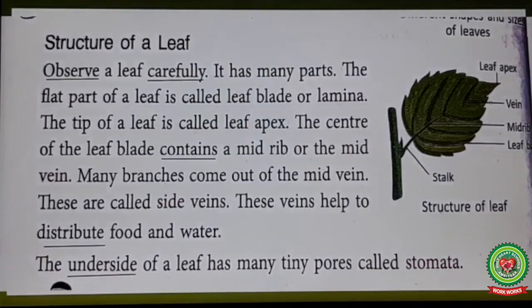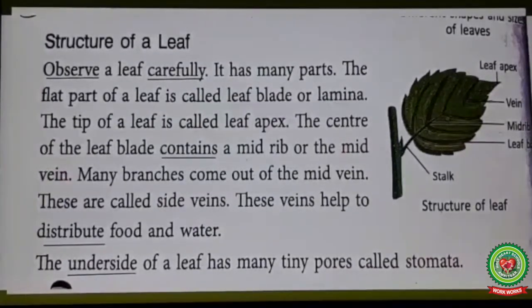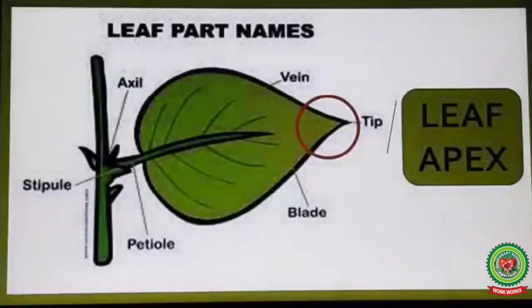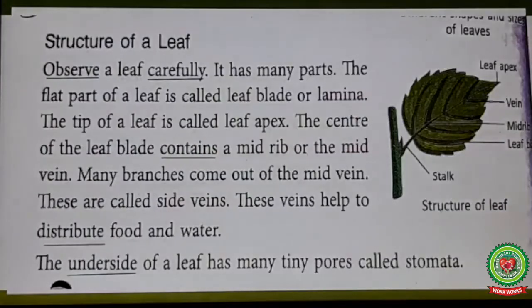The tip of a leaf is called the leaf apex. Look at this picture — this highlighted part of a leaf is called the leaf apex. Next line: the center of the leaf blade contains a midrib, or mid-wing.